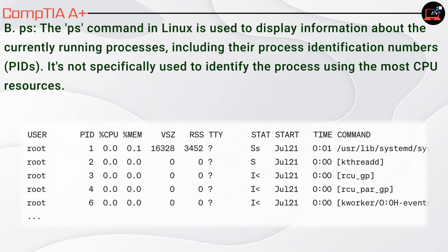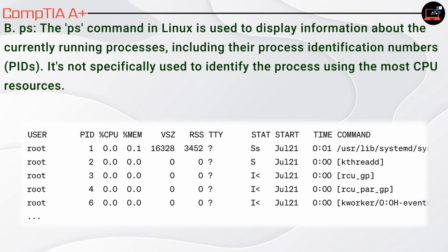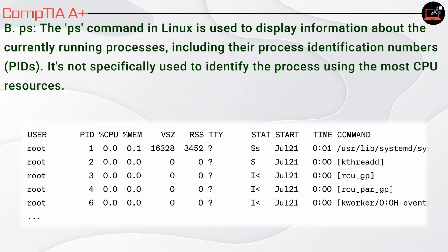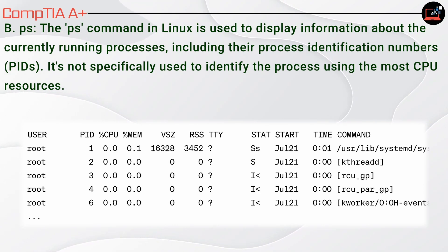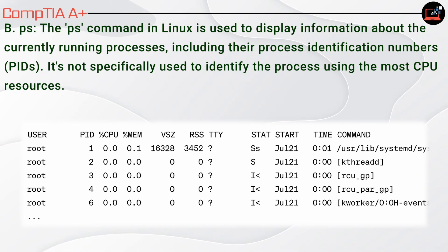B. ps. The ps command in Linux is used to display information about the currently running processes, including their process identification numbers, PIDs. It's not specifically used to identify the process using the most CPU resources.